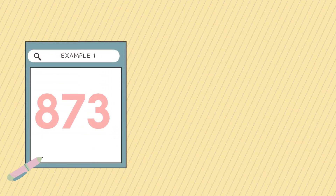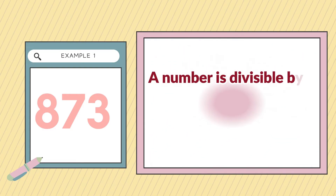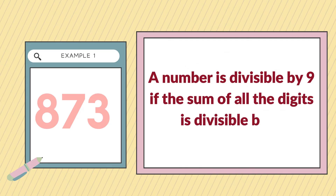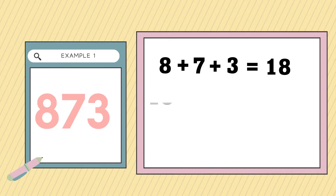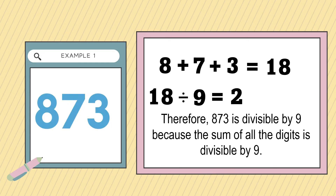For example, is 873 divisible by 9? Let's check. A number is divisible by 9 if the sum of all the digits is divisible by 9. So let's add all the digits: 8 plus 7 plus 3. 8 plus 7 is equal to 15, plus 3 is equal to 18. 18 divided by 9 is equal to 2. Therefore, 873 is divisible by 9 because the sum of all the digits is divisible by 9.